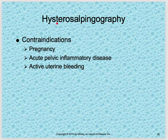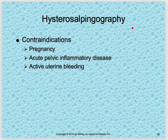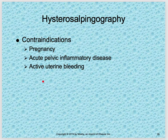Contraindications for an HSG — when you would not do the procedure: if a patient is already pregnant, if there is inflammatory disease within the pelvis, or if there is uterine bleeding. If they're on their menstrual cycle, you're not going to do an HSG. When scheduling, patients are given a window of when to come in so they don't have active uterine bleeding, ensuring the HSG can be performed under proper conditions.